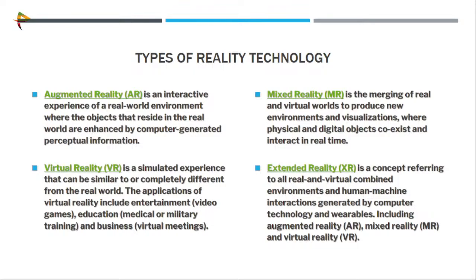Before going to AR and VR technology, first we need to know about the types of realistic technology. What are the realistic technologies we have? We have augmented reality, virtual reality, mixed reality, and extended reality. AR — augmented reality — is nothing but real-world technology. In the real-world environment, we add additional features like digital images on top of real-time applications with the help of AR.